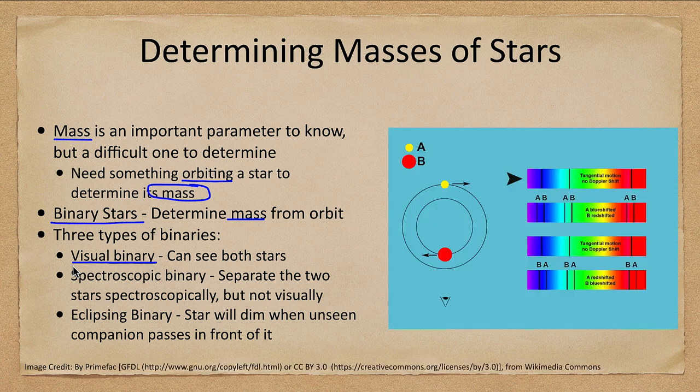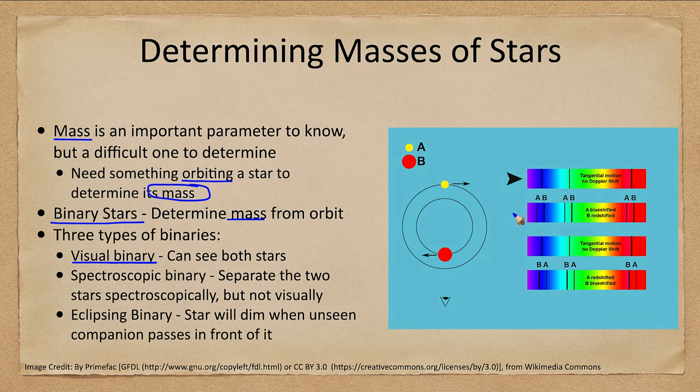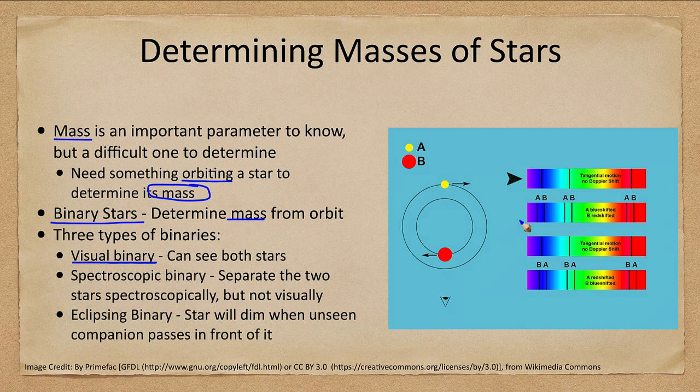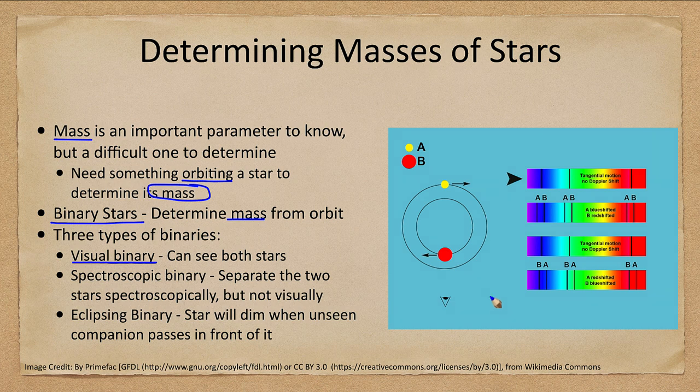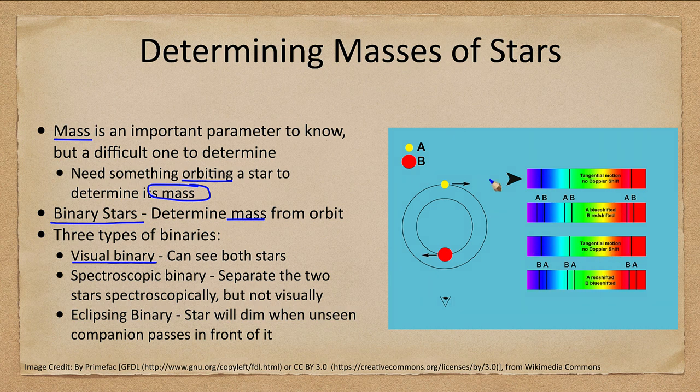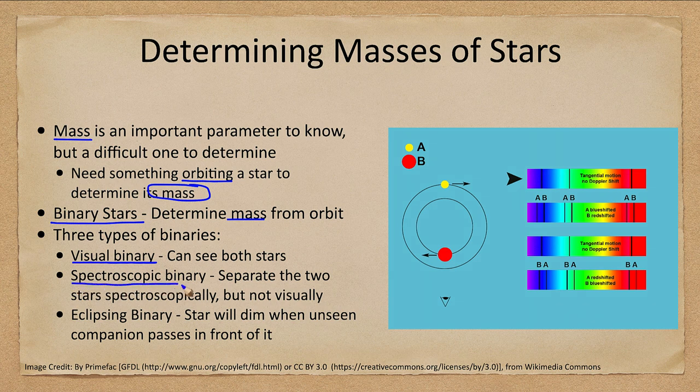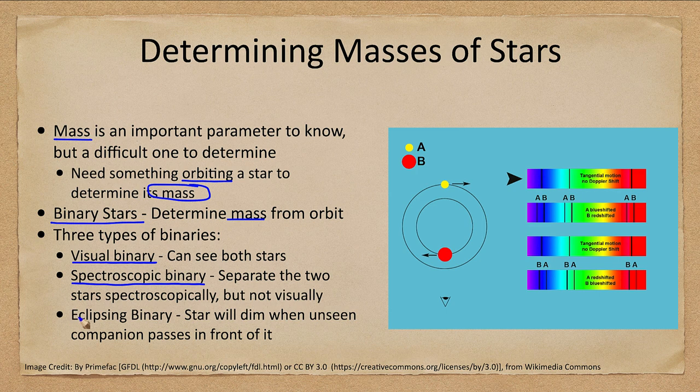We also have spectroscopic binaries where we cannot see two individual stars but we can see them in the spectrum. So when we look at the spectrum here we can see that there are lines from star A and B. When one star is moving toward us and one star is moving away, then we will get shifts in the opposite direction and those lines will separate. When they are going tangentially then we will see no shift. So this is an example of a spectroscopic binary. We cannot see the two stars individually but we can see evidence from the spectrum that there are two stars orbiting.